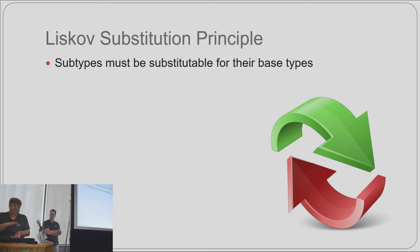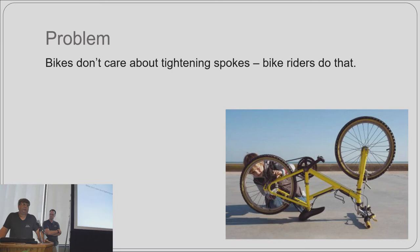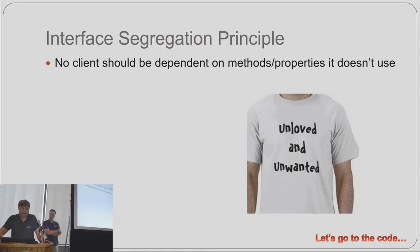LSP can be pretty subtle — you have to watch out for it. Another problem with that last code: one of the methods of the wheel class was to tighten the spokes. Bicycles don't care about tightening spokes. All the bicycle knows is that the wheel goes around and stops. It's up to the rider to determine whether a spoke is loose and needs tightening.